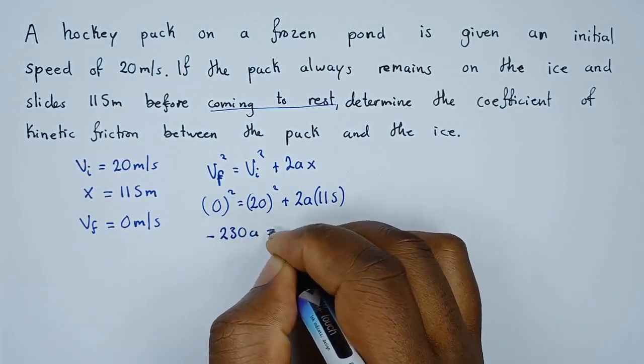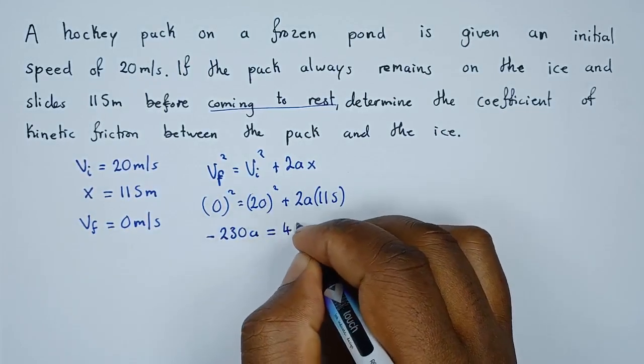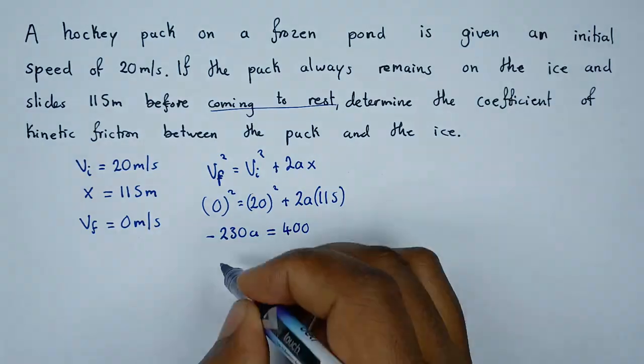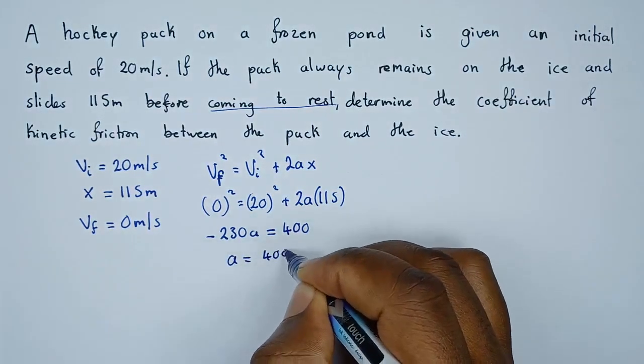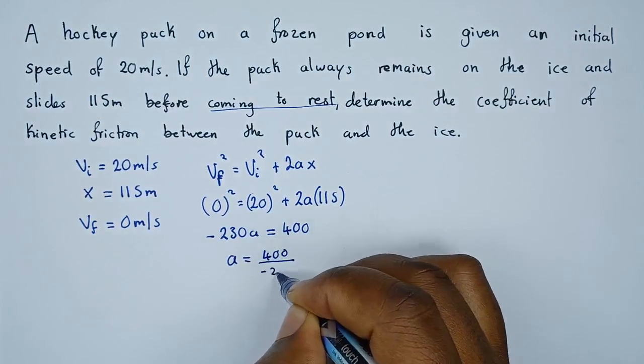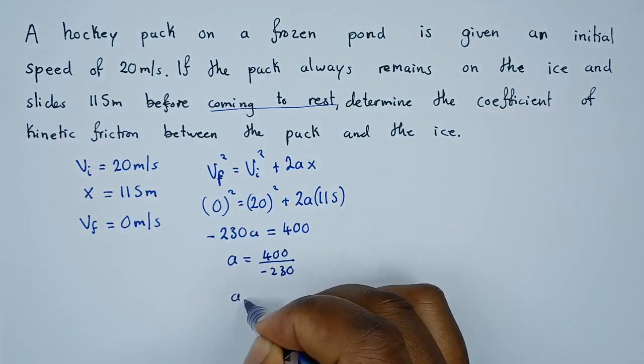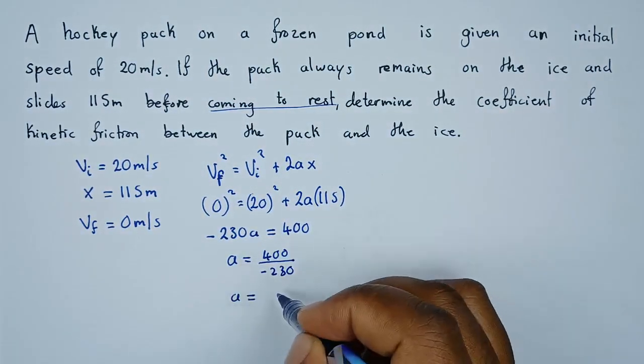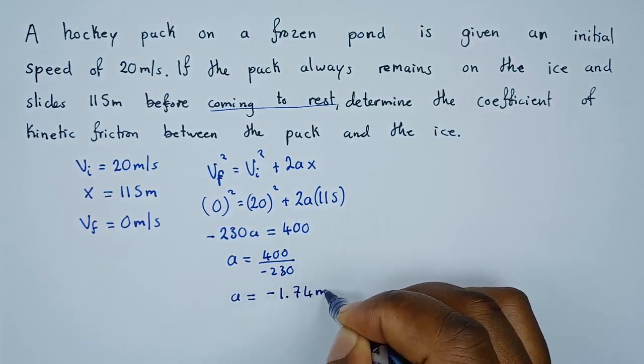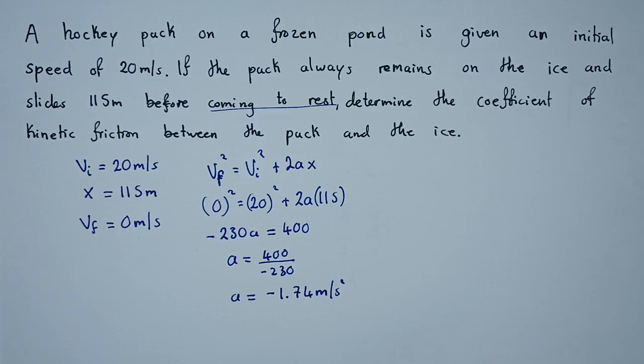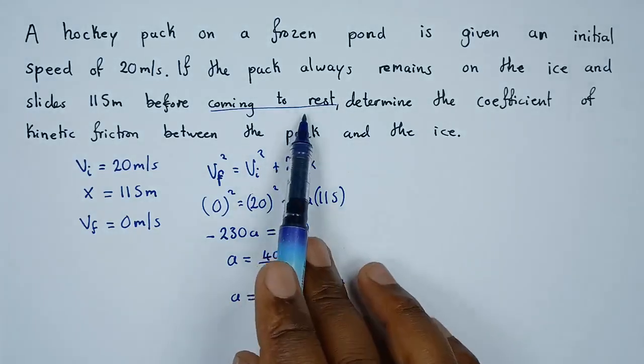To find acceleration we're going to say acceleration equals the 400 divided by negative 230. Hence our acceleration in this case will be negative 1.74 meters per second squared. So it's negative because this object was decelerating, remember it was coming to rest.